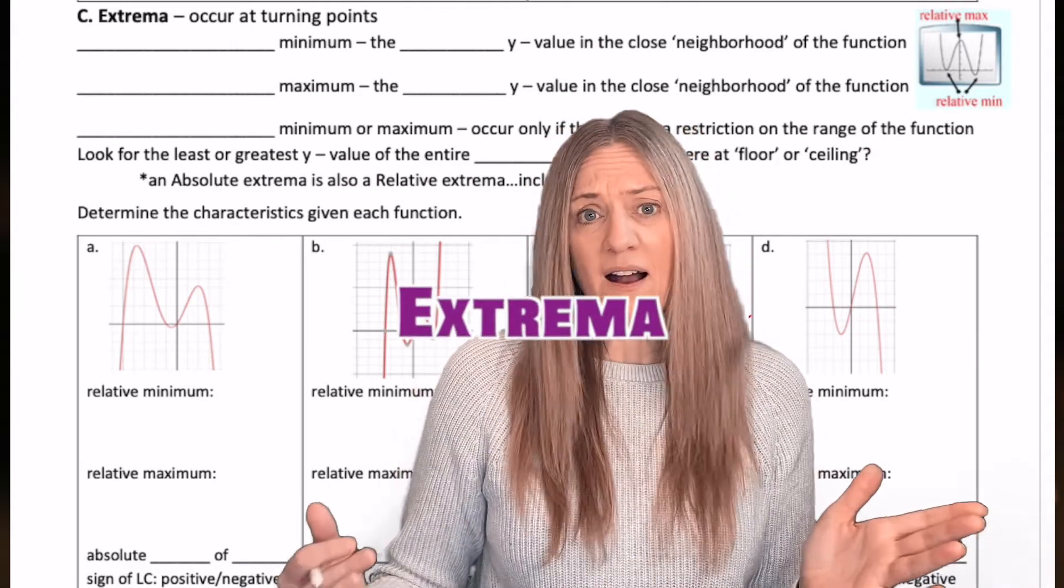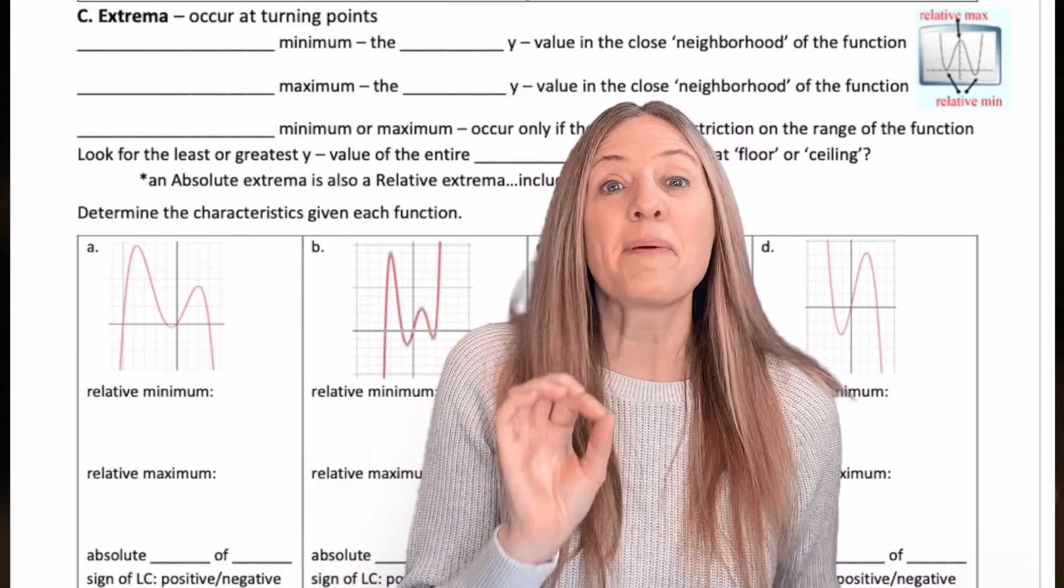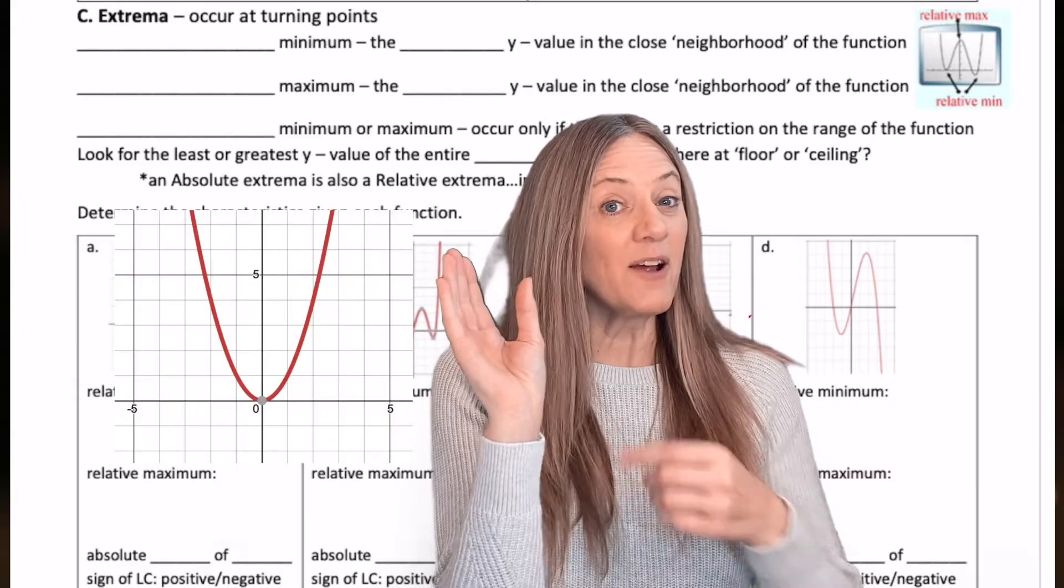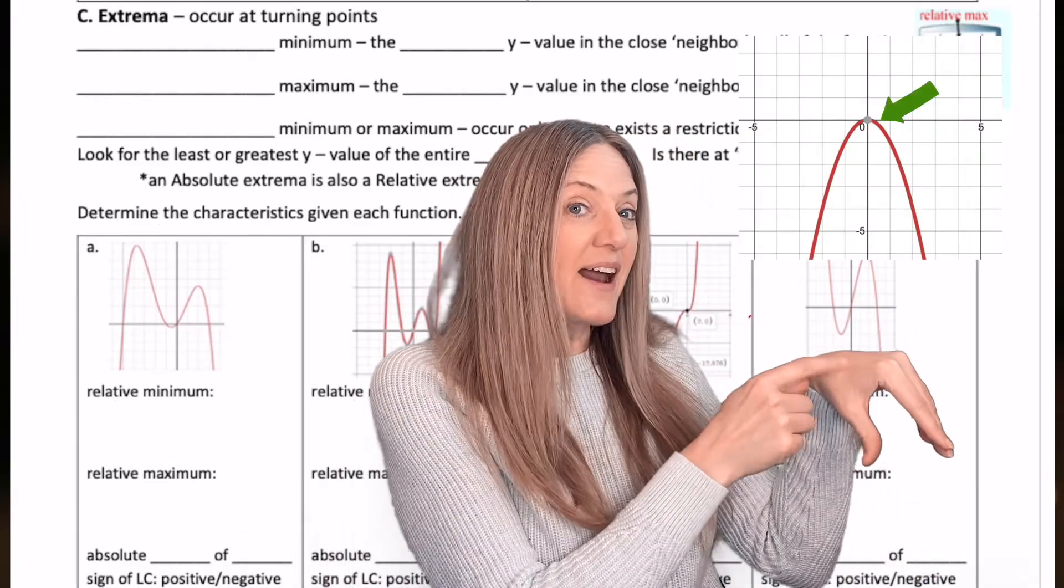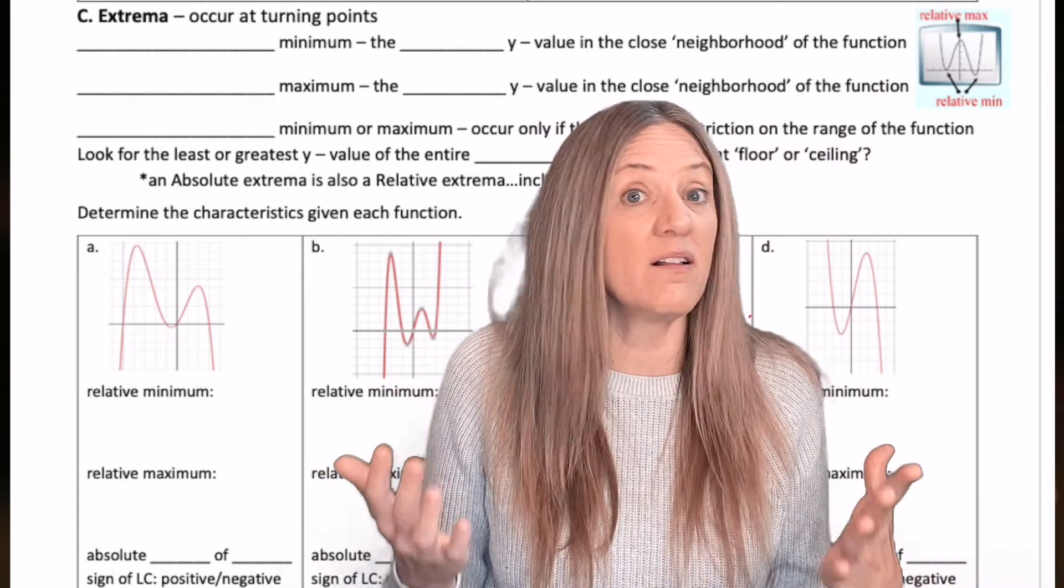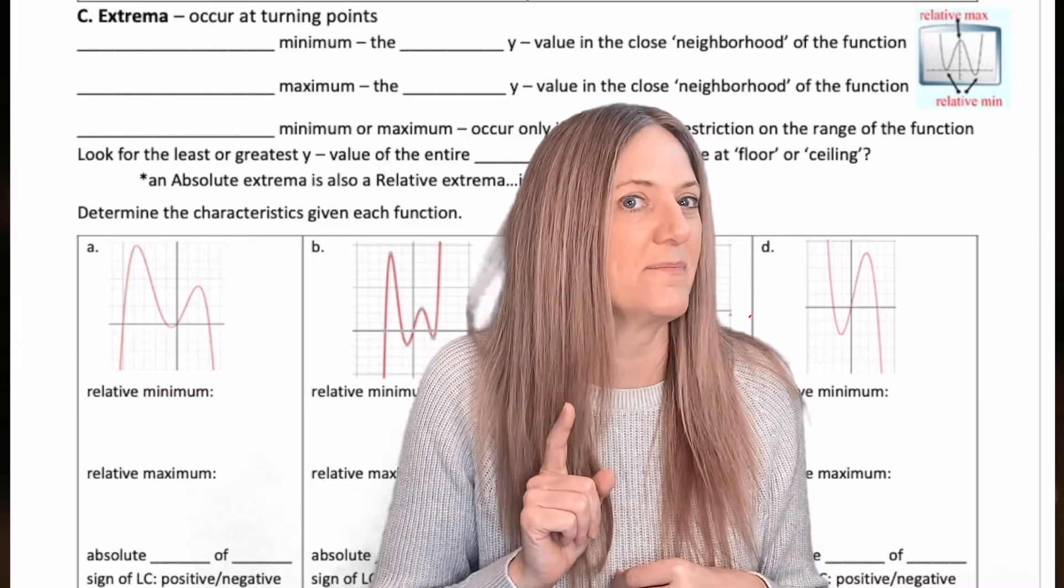Extrema, what are we talking about? We're just talking about mins and maxes, and we did a lot of that with quadratics. Remember our parent function y equals x squared, and we had a min, and then if it was reflected, then we had a max. That's all we're talking about, but now we have polynomials, so there can be multiple mins and maxes. Relative mins and maxes.